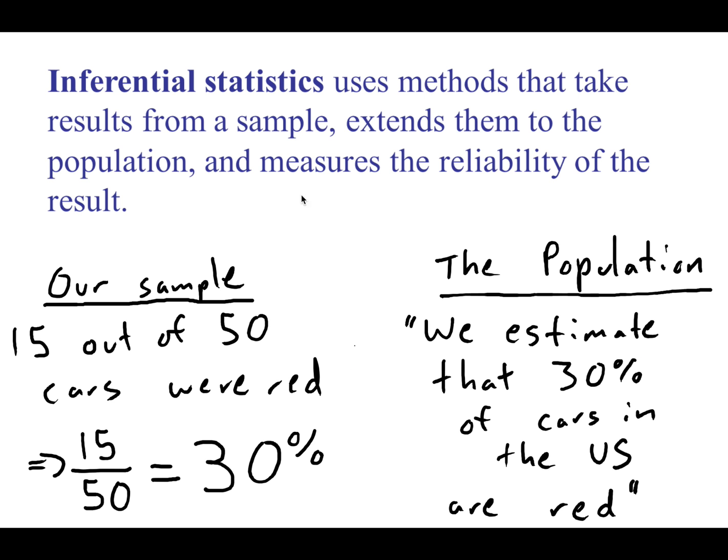Okay, so wrapping up section 1.1, which really has a lot of important stuff in it, is the idea of what's known as inferential statistics. That is making an inference, a statement about something. So what's going on here? Inferential statistics is saying we can use our sample to talk about the population.